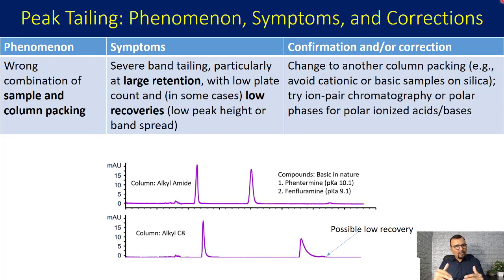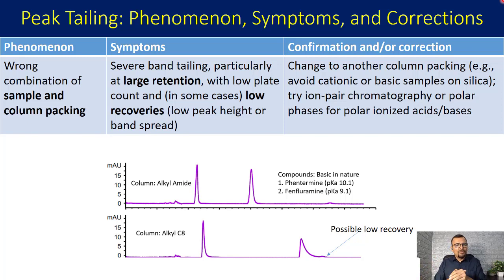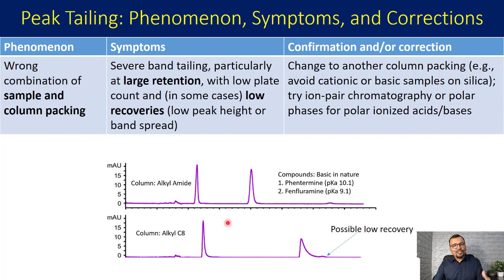In the chromatogram at the bottom, you will see that the alkyl C8 stationary phase is used and these two compounds are basic in nature. They have a significant amount of tailing, especially the late-eluting compound. There is also an impurity present on the tailing of the second compound, which is not having a good amount of response, so its recovery can get compromised. However, if the same sample is analyzed on the alkyl amide stationary phase, you will find the peak tailing has improved and the response for the impurity can be seen, so recovery for this impurity will be better.